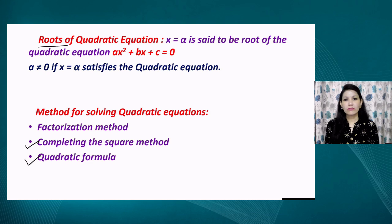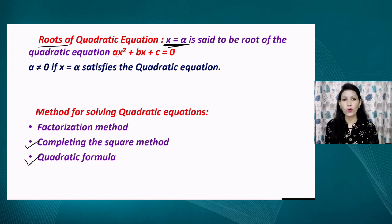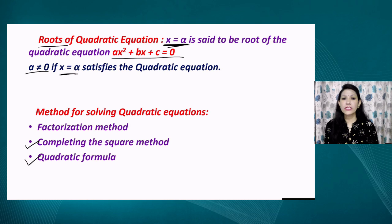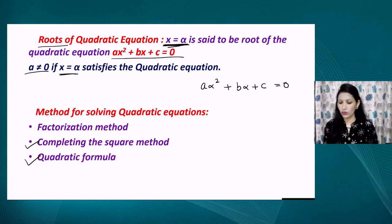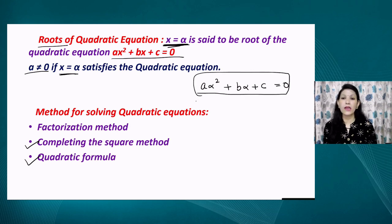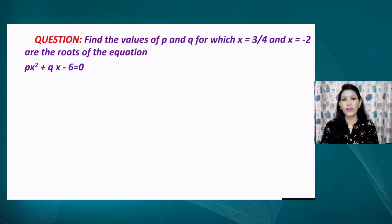Regarding roots of an equation: if x = alpha is the root of the quadratic equation ax² + bx + c = 0, where a ≠ 0, then x = alpha satisfies the equation. That means if we put alpha in place of x, we get A·alpha² + B·alpha + C = 0. If the left-hand side equals zero on substituting the value, then we say x = alpha is the root of the given equation. Let us solve one or two questions related to the same.